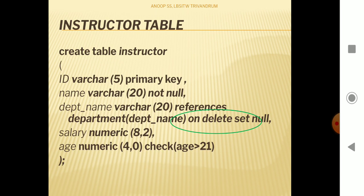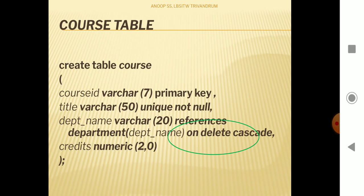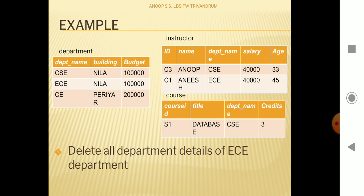With ON DELETE SET NULL, when a delete occurs on the parent table, that delete is allowed and the database deletes that parent value. After that, the parent value referenced in the instructor table is set to NULL. I am also going to set another type on the course table: ON DELETE CASCADE. ON DELETE CASCADE means if any value in the parent is deleted, any corresponding tuples in the course table are also deleted.